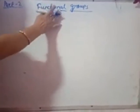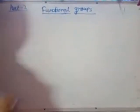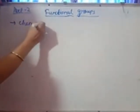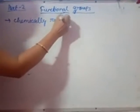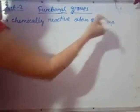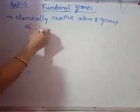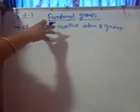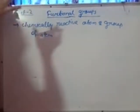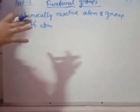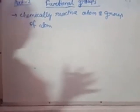Now children, we will read about functional groups. What are functional groups? Functional groups are the chemically reactive atoms or group of atoms present in the molecule of the organic compound which are responsible for the properties of the organic compound. According to the functional group only, that organic compound shows its properties. So the attachment of functional groups is very very important, and according to the functional groups, the organic compounds are divided into different parts.